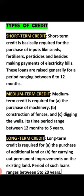Suppose a farmer needs to buy seeds, fertilizers, pesticides, or pay electricity bills — in this condition, the money required is short term credit. Why? Because this is money the farmer has the capability to repay within 6 to 12 months. So short term credit includes money to be returned within 6 to 12 months.